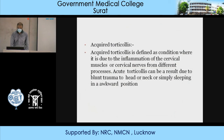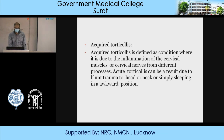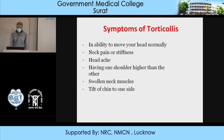Acquired torticollis is defined as a condition due to inflammation of the cervical muscles or cervical nerve from different processes. Acute torticollis can result from blunt trauma to the head or neck, or simply sleeping in an awkward position. Symptoms include: inability to move the head normally, neck pain or stiffness, headache, having one shoulder higher than the other, swollen neck muscles, and tilt of the chin to one side.